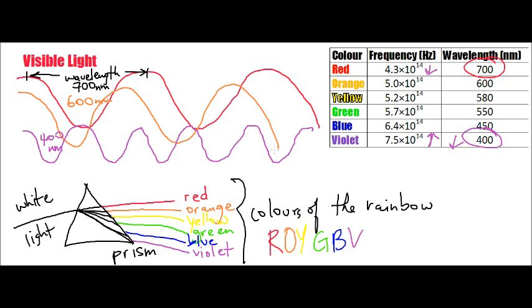So in other words, red would have the longest wavelength and the shortest frequency, while violet would have the shortest wavelength and the higher frequency.